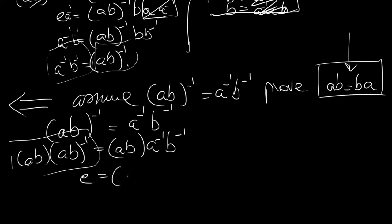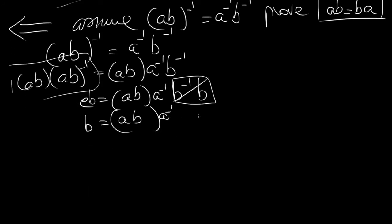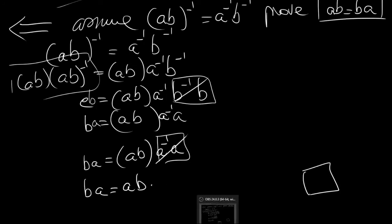Now operate on the right with B: we get B equals AB · A⁻¹, since the two B⁻¹ and B are inverses and cancel. Then operate on the right with A: BA equals AB · A⁻¹ · A. Those A's cancel, giving BA equals AB. We are done, and thank you for watching — see you in the next video.